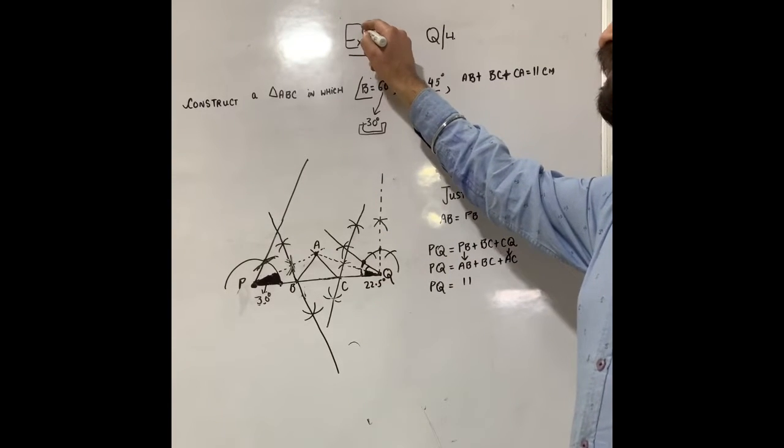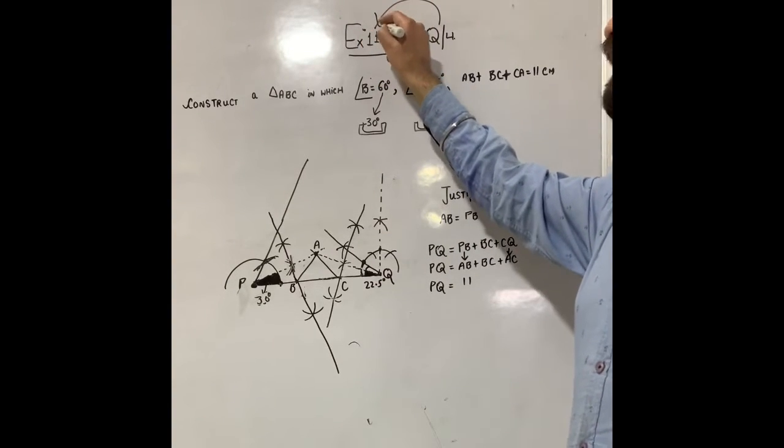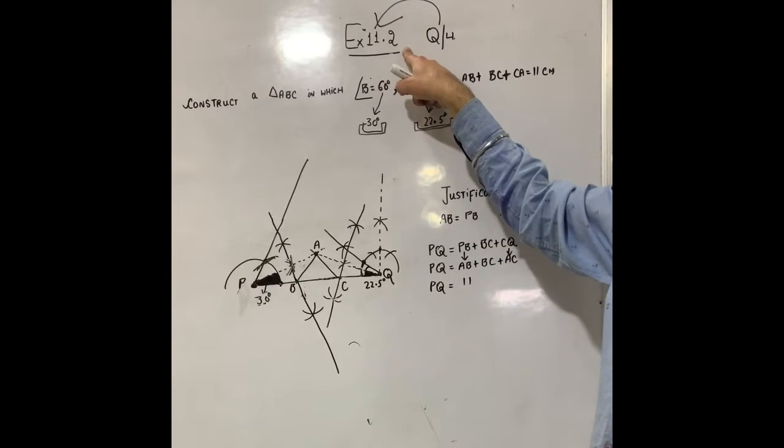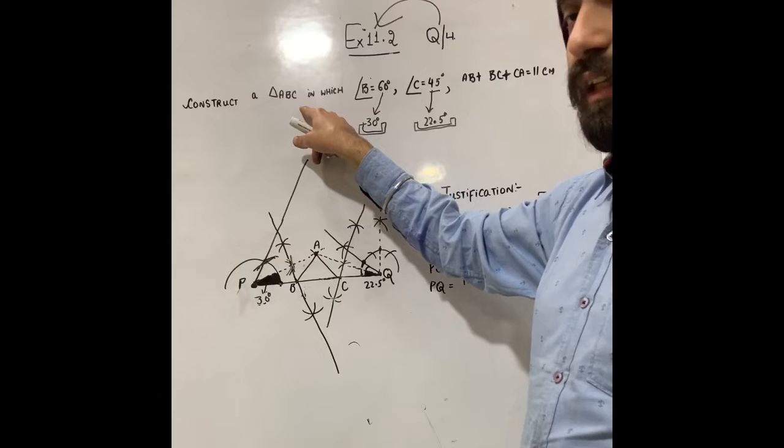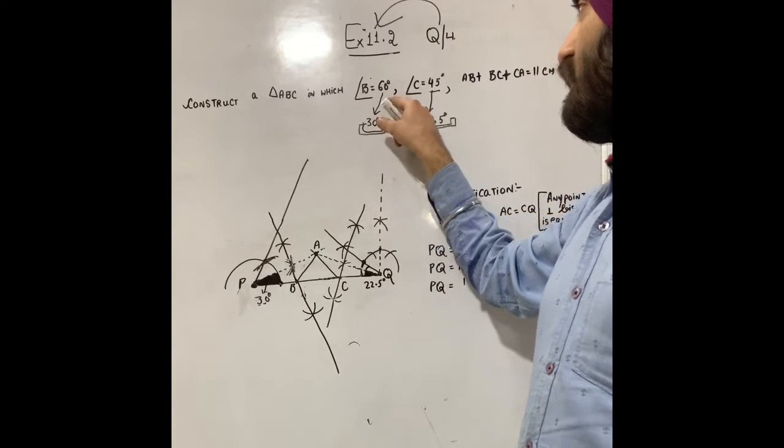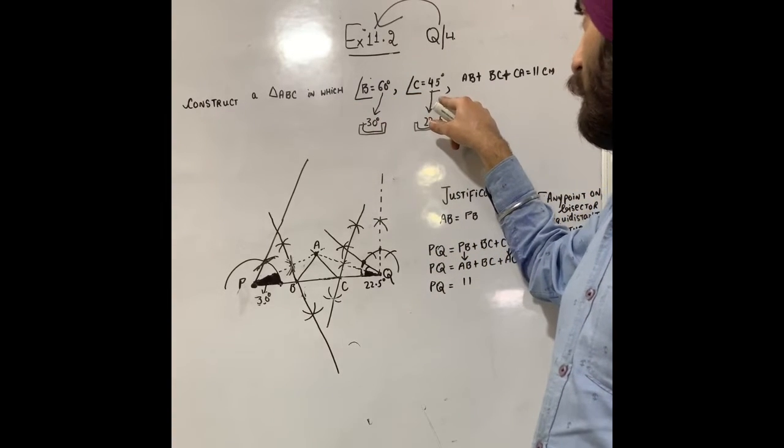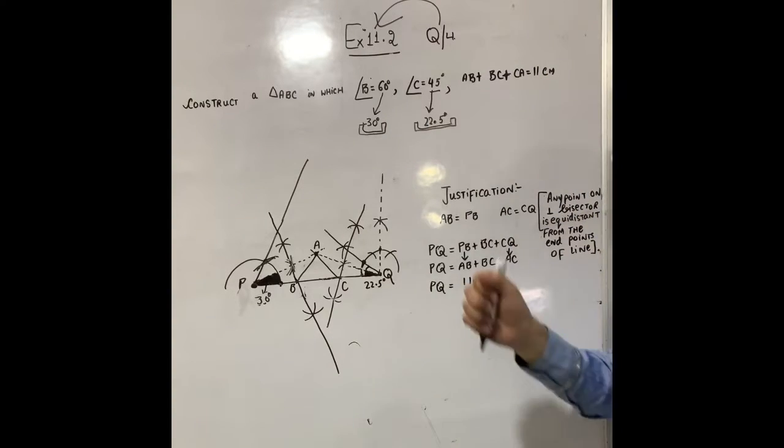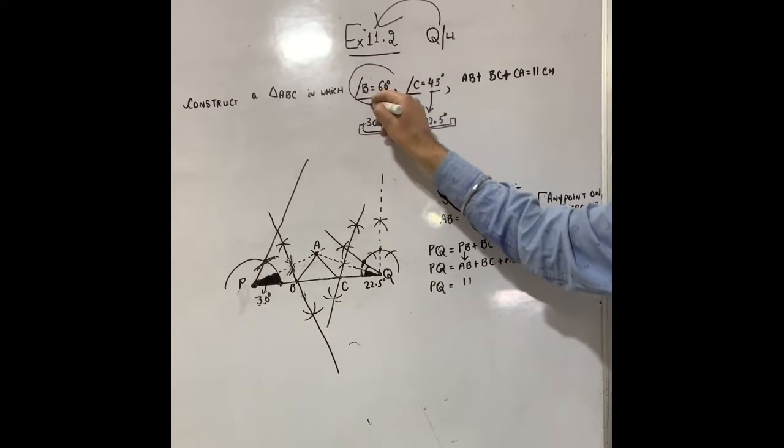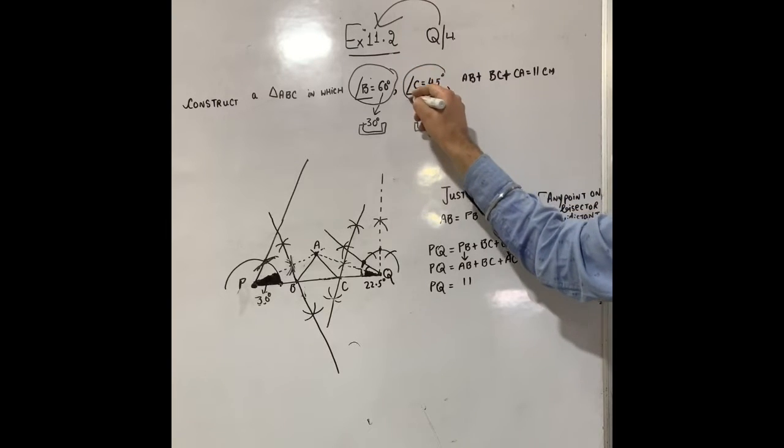Students, we are going to do question number 4 of your exercise 11.2 construction chapter. In this question, we have to construct a triangle ABC in which angle B is 60 degrees, angle C is 45 degrees, and AB plus BC plus CA equals 11 cm.